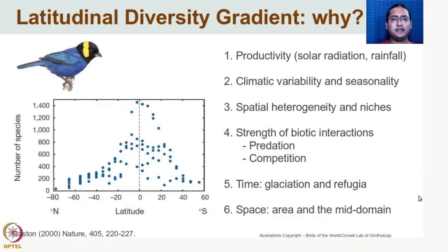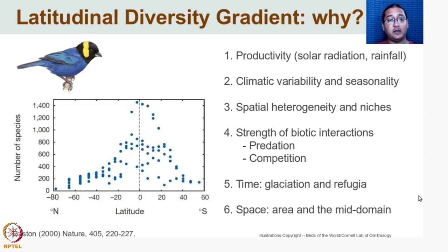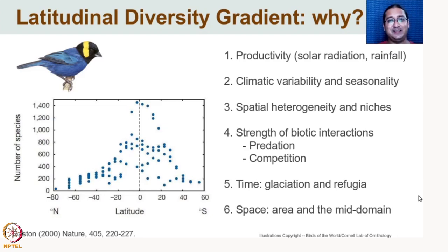The latitudinal diversity gradient has been known for a long time — one of the first patterns early ecologists recognized. It's been subject to intense speculation. A graph from South America shows about 1,400 bird species at the equator, declining to nearly zero at 80 degrees north and about 150 species at 60 degrees south. The tropics are massively diverse, and there are more than 120 different explanations proposed for why this latitudinal diversity gradient exists.